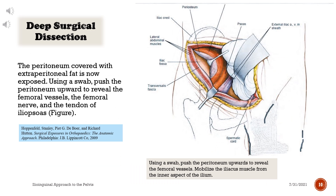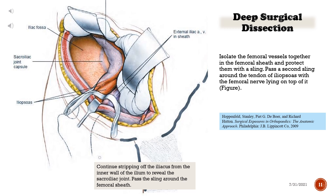The peritoneum, covered with extraperitoneal fat, is now exposed. Using a swab, push the peritoneum upward to reveal the femoral vessels, the femoral nerve, and the tendon of iliopsoas. Mobilize the iliacus muscle from the inner aspect of the ilium. Isolate the femoral vessels together in the femoral sheath and protect them with a sling.